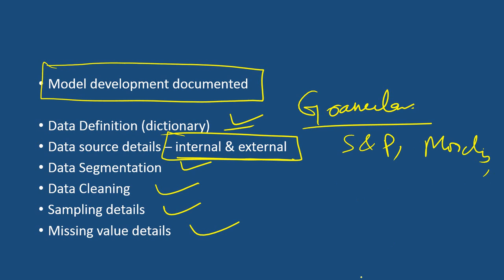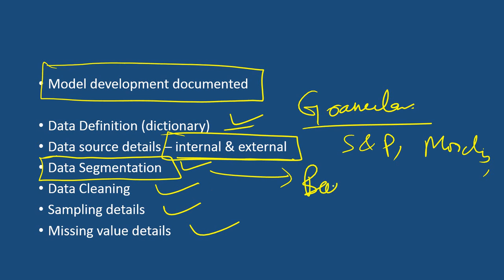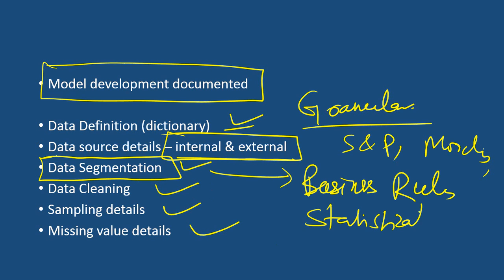Data segmentation is another important item. Many times you do not use the entire data — you use segmentation. When you do segmentation, there should be a basis on which it is done, using business rules or statistical techniques. All these things should be documented in the model document and there is no way to bypass this.